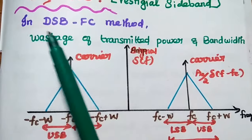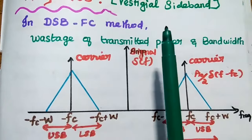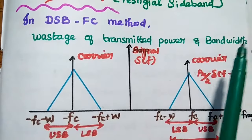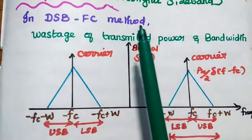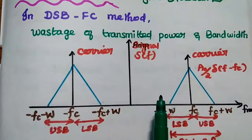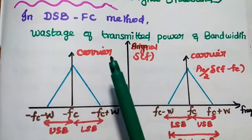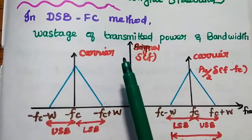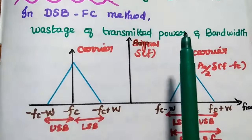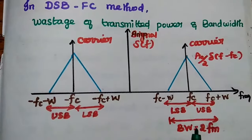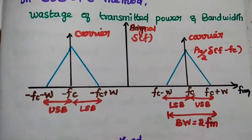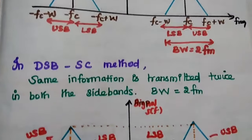In DSBFC, that is Double Sideband Full Carrier Method, the major drawback is wastage of transmitted power and bandwidth. In this full carrier method, we transmit the carrier signal along with the sidebands. The carrier does not contain any information, but we are sending the carrier signal also — that is called wastage of transmitted power. The bandwidth is equal to two times the modulating frequency, which is also a wastage of bandwidth.